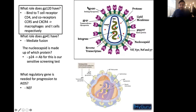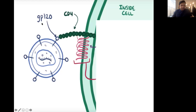So in summary: GP120 is docking, GP41 is fusion. You also have integrase, reverse transcriptase, and protease — we'll talk about those in the next slide. And P24, which we discussed, is what we use for our diagnostic tests.